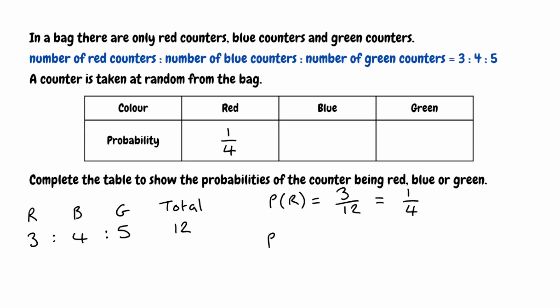So our probability of picking a red counter would be one quarter. Now for the probability of the counter being blue, we know that there are four parts for blue, and we're going to put that over the total amount of parts, which was 12. So our probability here would be 4 twelfths. But we can also simplify this — we can divide top and bottom both by four, and that gives us one third. So our probability of picking a blue counter would be one third.